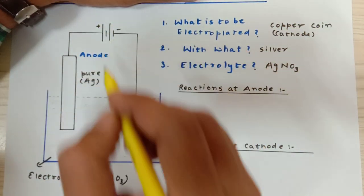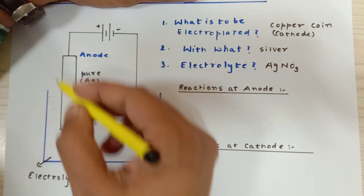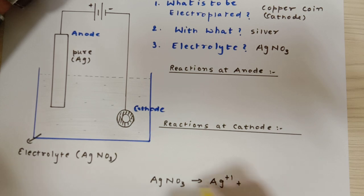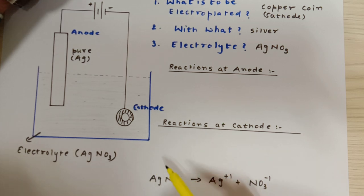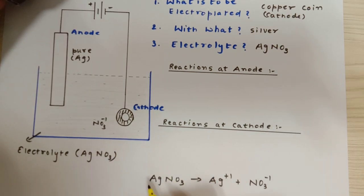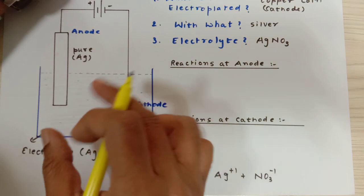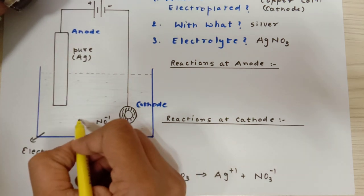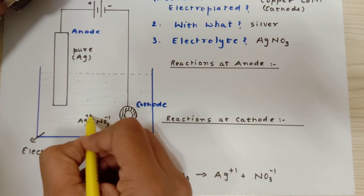Now, what is going to happen? The moment you switch on this circuit, the electric current will pass through the circuit and this AgNO3 will split up into Ag+1 and NO3-1. The electric current is going to break this entire compound into Ag+1 and NO3-1. Here I am going to show the reaction of only one single molecule, and there are crores of molecules over here.